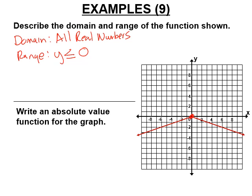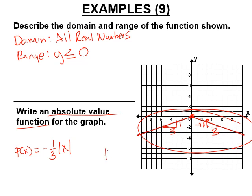Now write an absolute value function for a given graph. It's V-shaped, so we know it has absolute value. The slope on one side looks like one third and on the other side negative one third, but the graph is upside down, so f(x) = negative one third times the absolute value of x. This is a vertical shrink of f(x) = |x|, reflected across the x-axis.